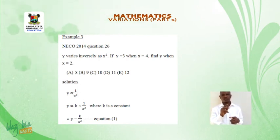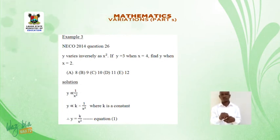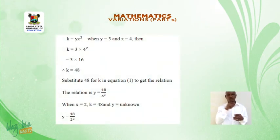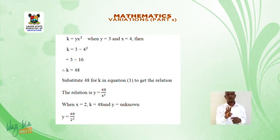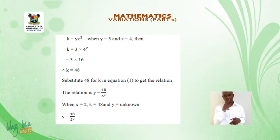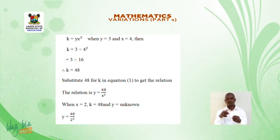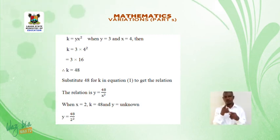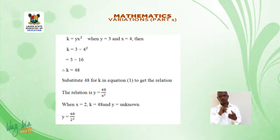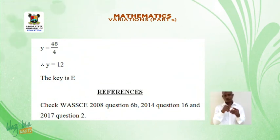Solution. Y varies inversely as x squared: y = k × (1/x²), where k is a constant. Therefore y = k/x² (equation 1), and k = yx². When y = 3 and x = 4: k = 3 × 4² = 3 × 16 = 48. When x = 2 and k = 48: y = 48/2² = 48/4 = 12. Therefore y = 12, and the answer is e.